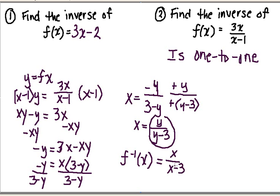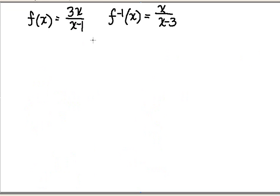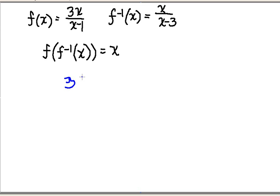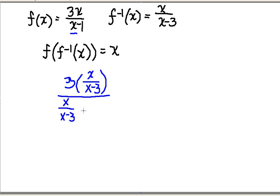So now I want to check that to see if my compositions hold true. Here I have my original function and my inverse. I'm going to see if f of f inverse of x equals x. So I'm going to go to my f function, and wherever I have an x, I'm going to plug in f inverse of x, which is x over x minus 3. My denominator is an x, but in place of that x I'm going to write x over x minus 3, and then subtract 1.